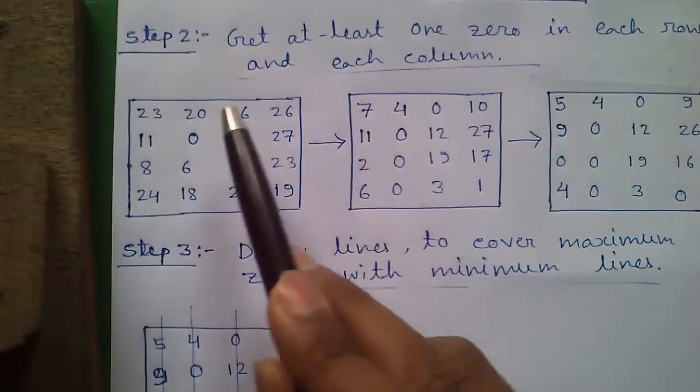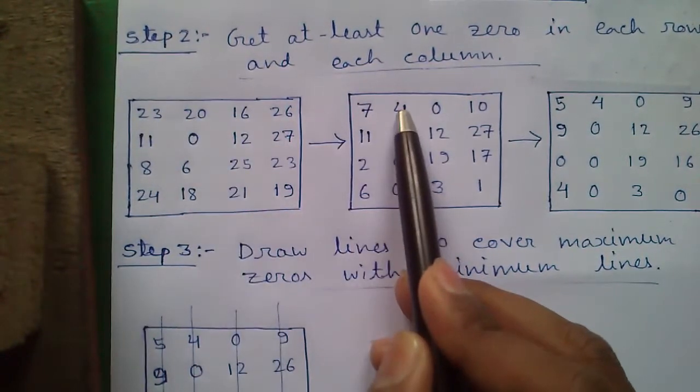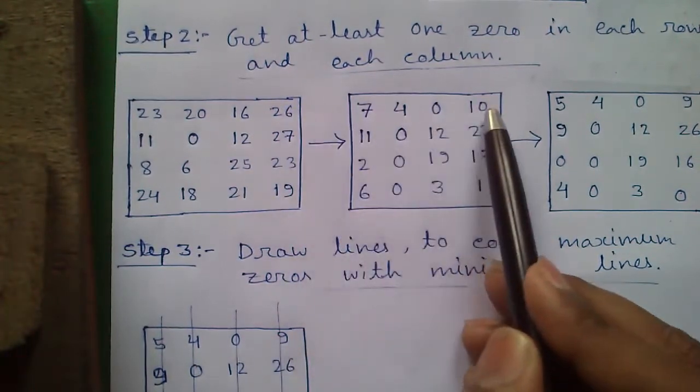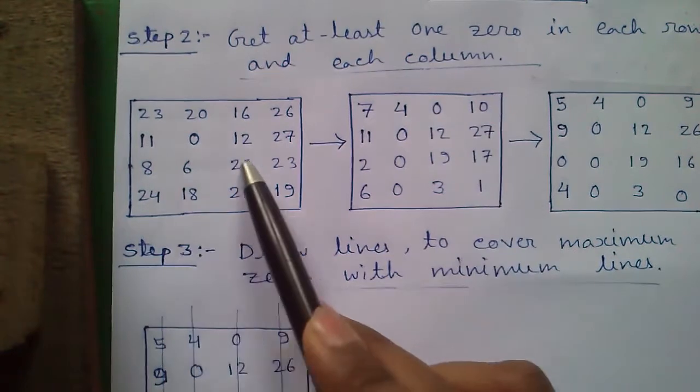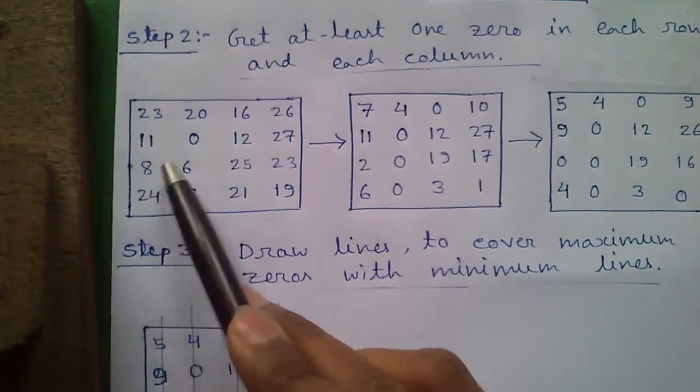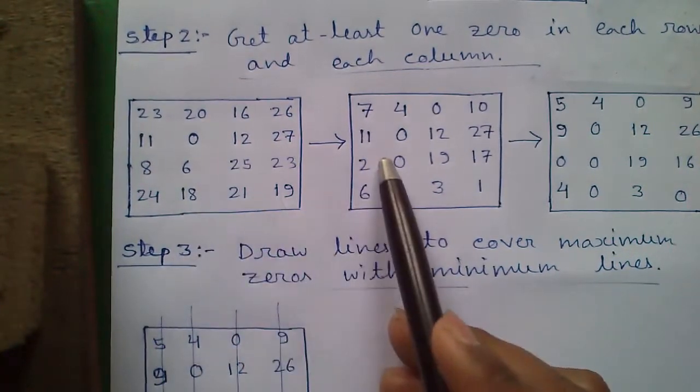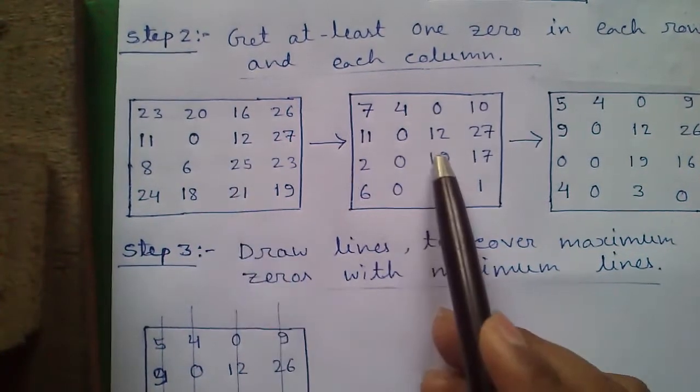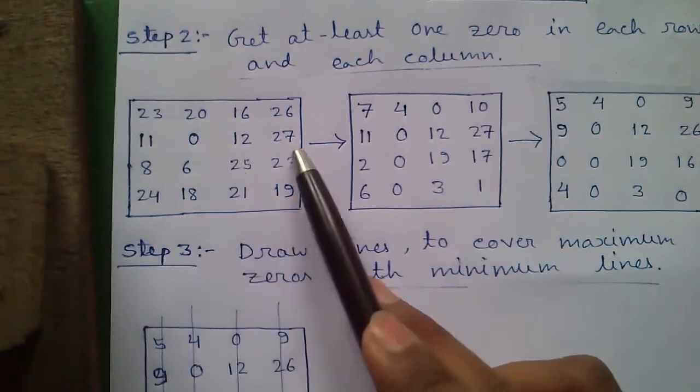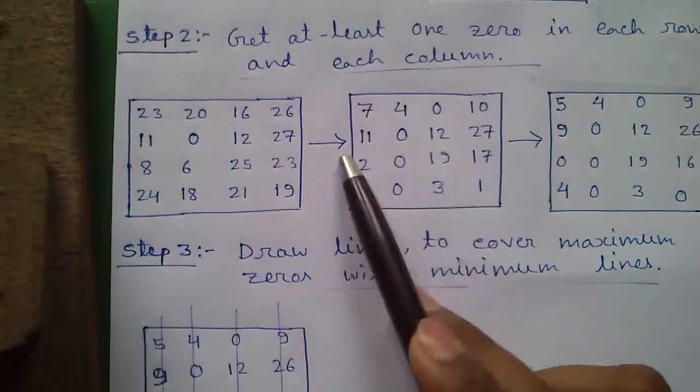In row 1 the smallest number is 16. Subtract 16 from each number in row 1. So 23 minus 16 is 7, 20 minus 16 is 4, 16 minus 16 is 0, and 26 minus 16 is 10. Similarly do the same for row 3. The smallest number is 6. So 8 minus 6 is 2, 6 minus 6 is 0, 25 minus 6 is 19, and 23 minus 6 is 17. Doing row operations we get this matrix.